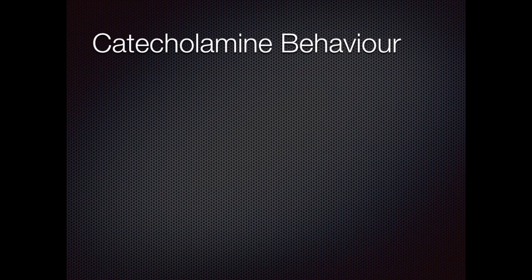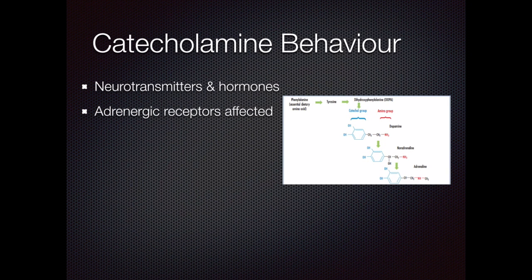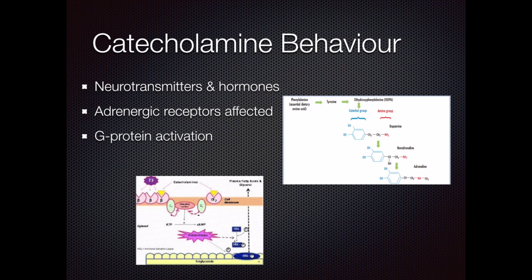Both inotropes and vasopressors are catecholamines. Naturally occurring catecholamines are both neurotransmitters and hormones. We use synthetic versions of these agents as vasopressors and positive inotropes. The diagram shown illustrates how to make the synthetic versions. The only difference between the different types of drugs is the amine group off the catechol group. They work on adrenergic receptors, which are G-protein-coupled receptors on the extracellular membrane. The drug binds to the receptor on the membrane, causing a change in the intracellular structure, which then activates a G-protein. This G-protein initiates a secondary messenger cascade via something like adenylate cyclase and cyclic AMP.